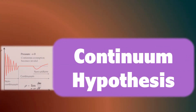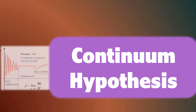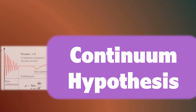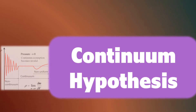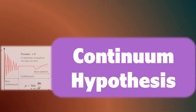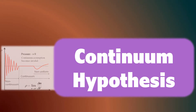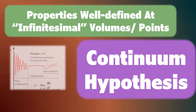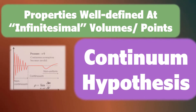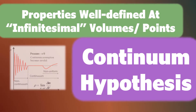Thankfully, though, there's a range of sizes of volume where the properties are almost unaffected. So, we take the value of the property in that range to be its true value. Because of this, the Continuum Hypothesis says that properties such as density and velocity can be taken as well-defined at infinitesimal volumes.